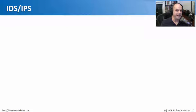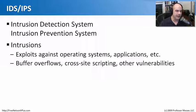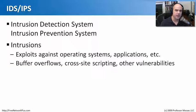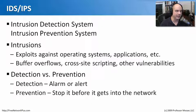Let's start with IDS or IPS — Intrusion Detection System or Intrusion Prevention System. This device sits on your network and either prevents or detects intrusions such as exploits against operating systems, bad applications, buffer overflows, cross-site scripting, and website database injection issues. If it's an IDS, it's detecting what's going on — it sends an alarm or alert to let you know, for example, that someone tried a buffer overflow to access a server. It doesn't actually stop anything; it's only detecting.